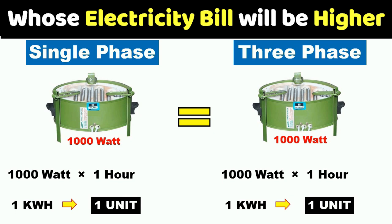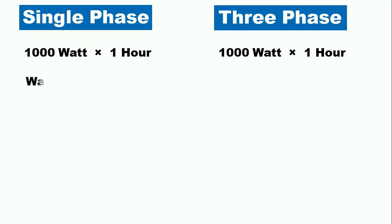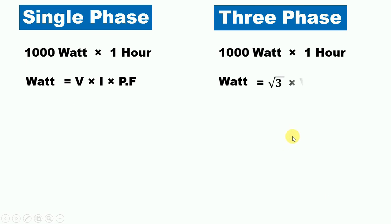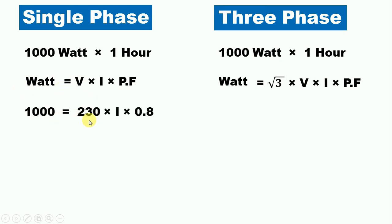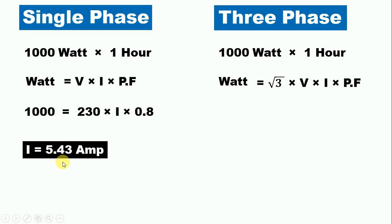To understand this concept, let us use the formula for power. For single phase: P = V × I × power factor. For single phase, power is 1000 watt, voltage is 230 V, power factor is 0.8, and we solve for current. When we solve this, the answer comes out as 5.43 ampere. It means this 1000 watt heater operating on single phase draws 5.43 ampere current.